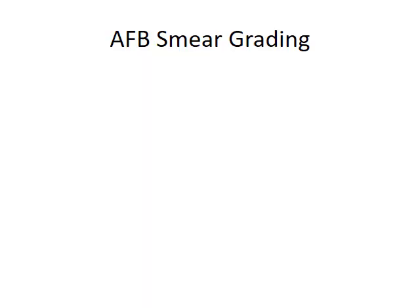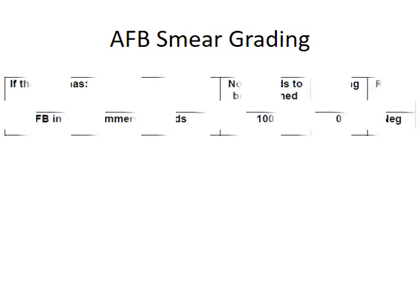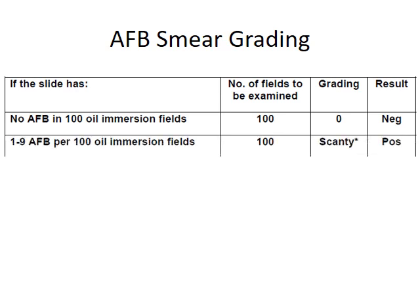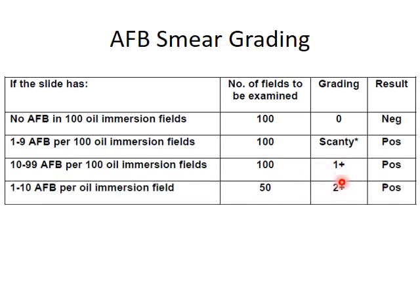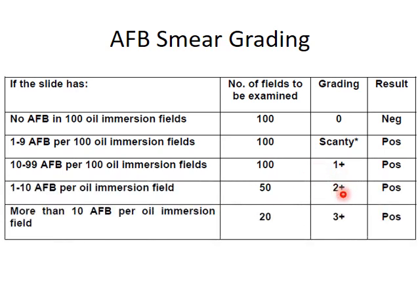As we can see here in the ZN staining, we can see the acid-fast bacilli against the blue background. The ZN stain grading system is: negative, scanty, plus one, plus two, and plus three.